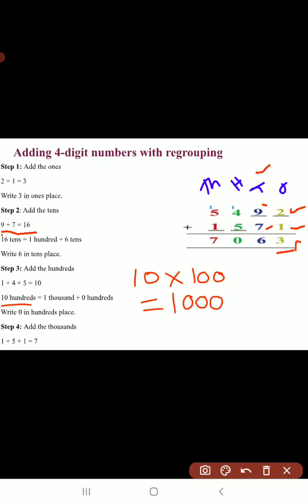So, there are 1000 and 0 100's. So, write 0 in 100's place and take 1 as a carryover to the 1000's place.